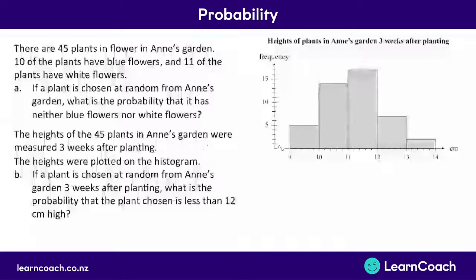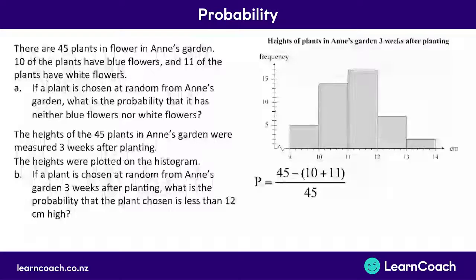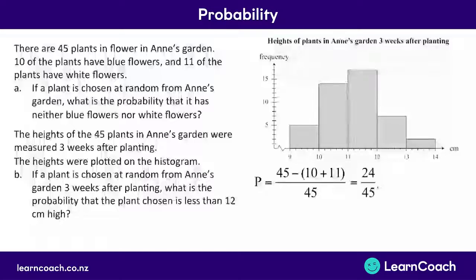It tells us there are 10 blue flowers and 11 white flowers. This leaves 24 flowers left over. Out of our total of 45 plants, we take away the blue and the white flowers — the 10 and the 11 — and that gives us 24 in total. We divide the number of non-blue and white flowers by our total number of flowers, 45. That gives us a probability of 24 out of 45.